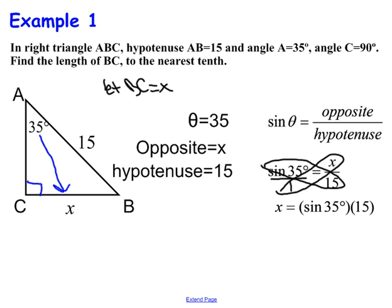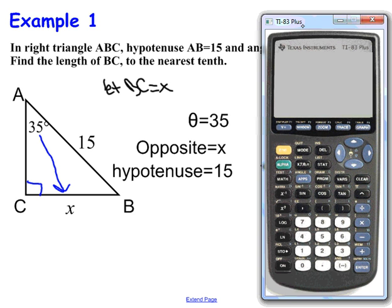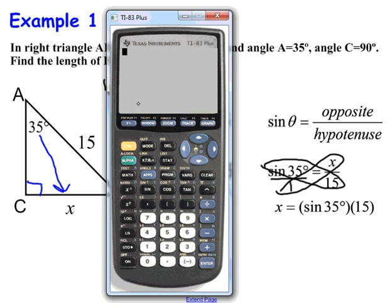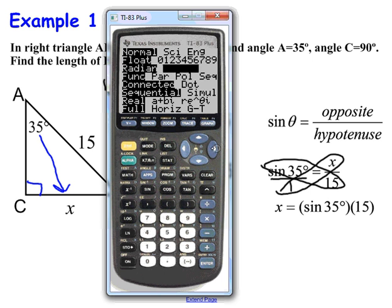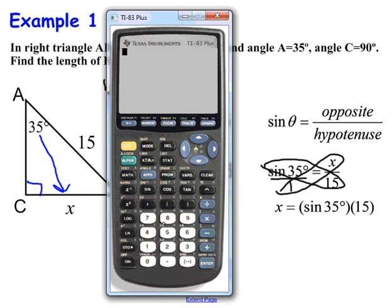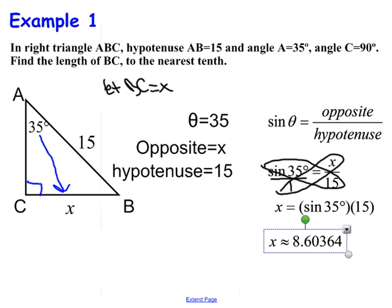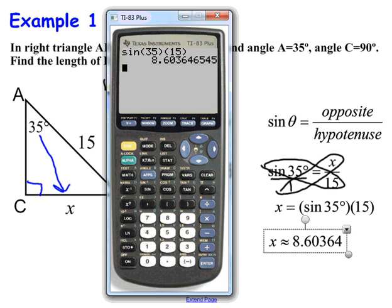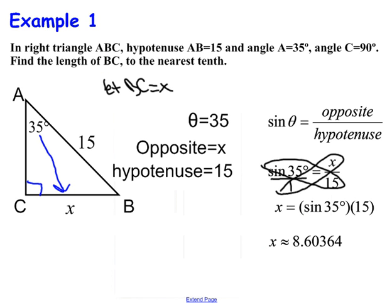So let's pull out our calculators. I got my calculator. Now, before I do anything, I have to make sure my calculator is in degree mode. So go to mode and change it to degree mode, or if it's already in degree, leave it in degree mode. And the reason being is that our angles are in degrees. So we're going to work in degree mode. So I write the sine of 35, close parentheses, times 15. And that's approximately 8.60364. Now, I have to round it to the nearest tenth. So my final answer is 8.6.